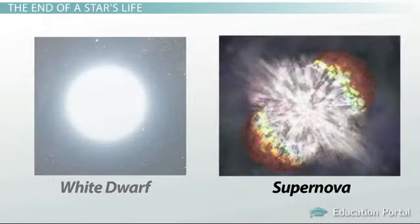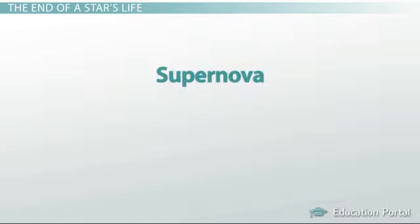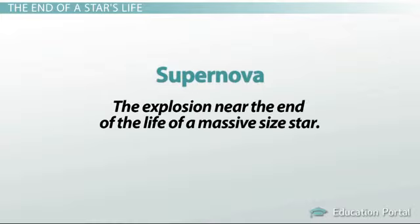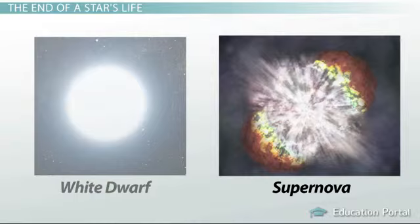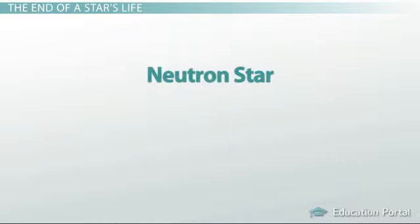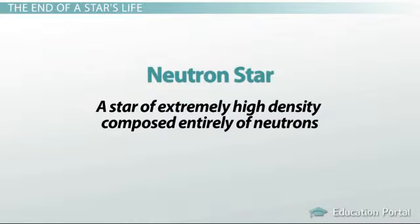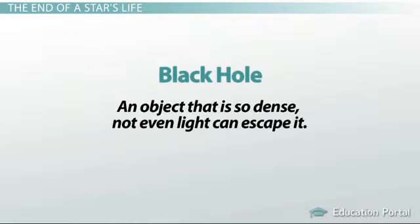The red supergiants end their life a little more spectacularly. They undergo a supernova explosion, the explosion near the end of the life of a massive-sized star. After the explosion, the star on this path ends its life as either a neutron star, a star of extremely high density composed entirely of neutrons, or a black hole, an object that is so dense not even light can escape it.